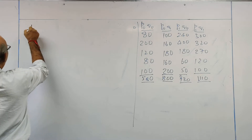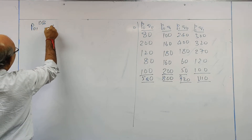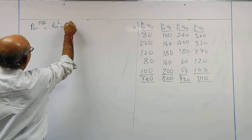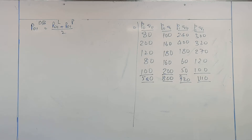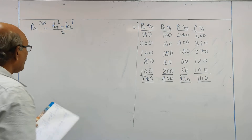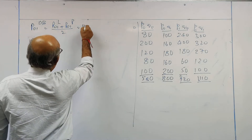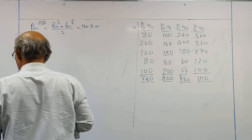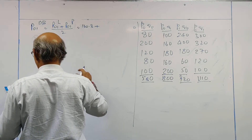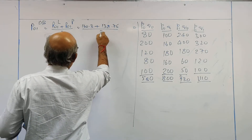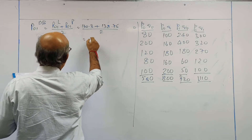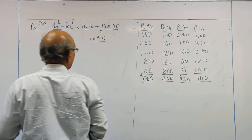Next: price index number by Dorbish-Bowley. It is the arithmetic mean of price index number by Laspeyres and price index number by Paasche's. So this is equal to 160.3 plus 138.75 divided by 2.